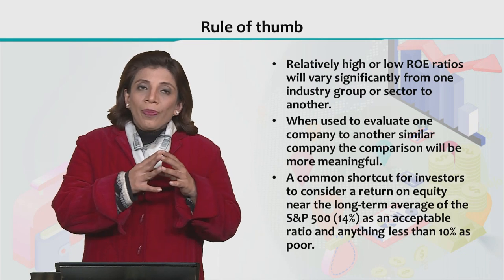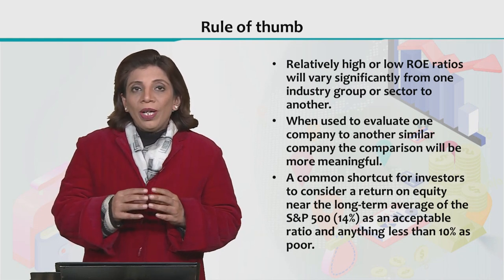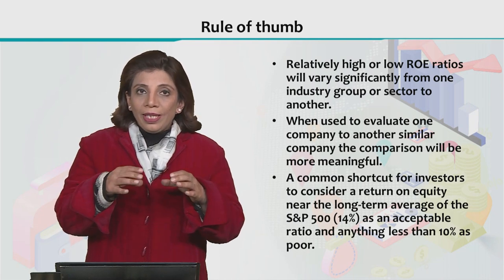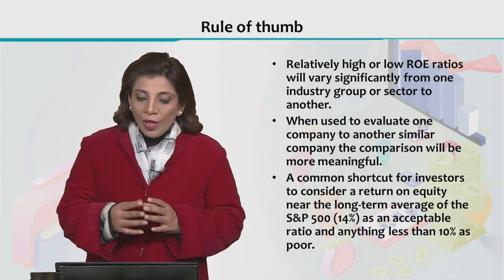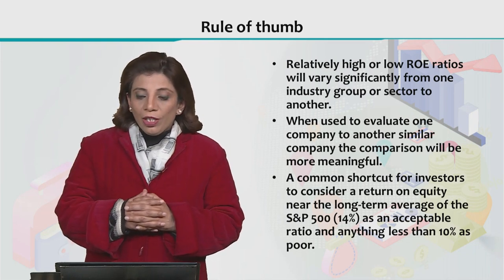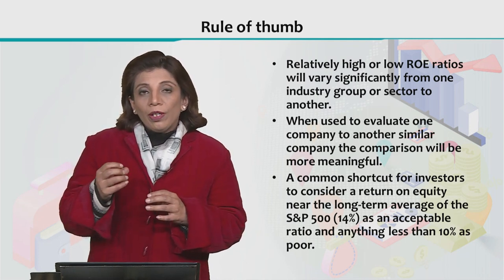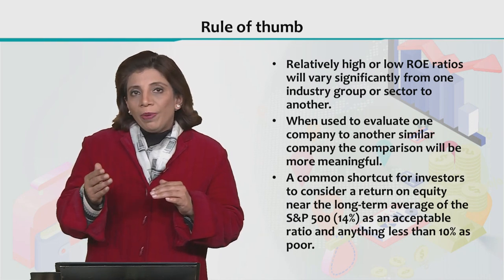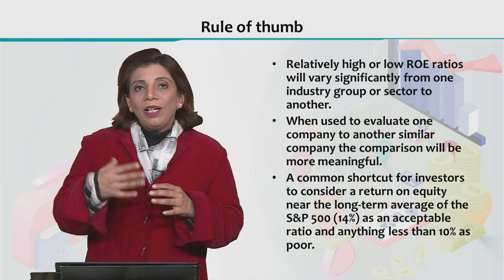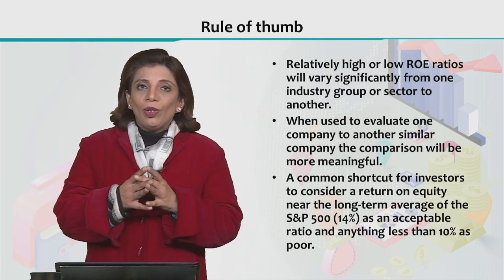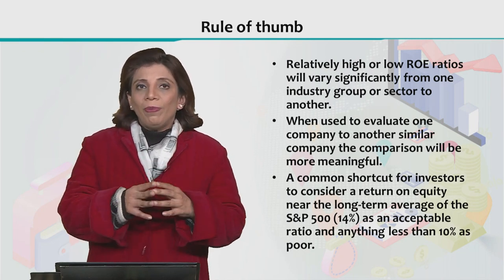When evaluating the financial performance of a company, it is necessary that you compare the ROE of your company with companies in the same sector for comparison purposes. There is another very common shortcut used by investors: if the ROE is somewhat close to 14%, the company is considered to be doing good. This 14% is the benchmark used at the international level when comparing global companies' ROE and financial performance.